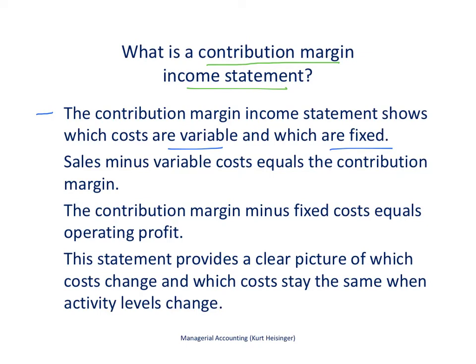There are subtotals along the way, including a line item called the contribution margin. The contribution margin is found by taking sales minus variable costs. Then we subtract fixed costs from the contribution margin to arrive at operating profit. This provides a clear picture of which costs will change and which will stay the same if we change our activity levels — for example, if we change the goods that we produce and sell.